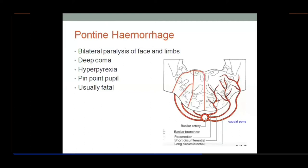Both sides of the face will be completely paralyzed. The facial nerve nucleus lies at the lower pons, so the paralysis will be lower motor neuron type, though with bilateral lesions the entire face will be paralyzed regardless.